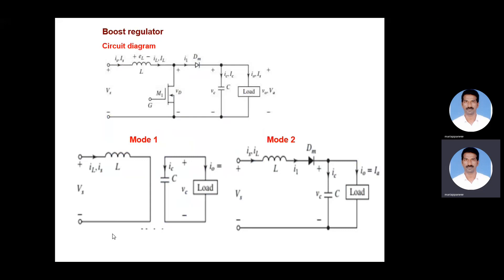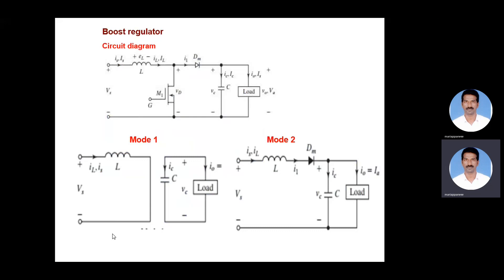Now we are going to see how the boost converter works. It mainly consists of four components, as you can see from the circuit diagram. These are an inductor, a diode, a MOSFET switch, and a capacitor connected across the load — only four simple devices.